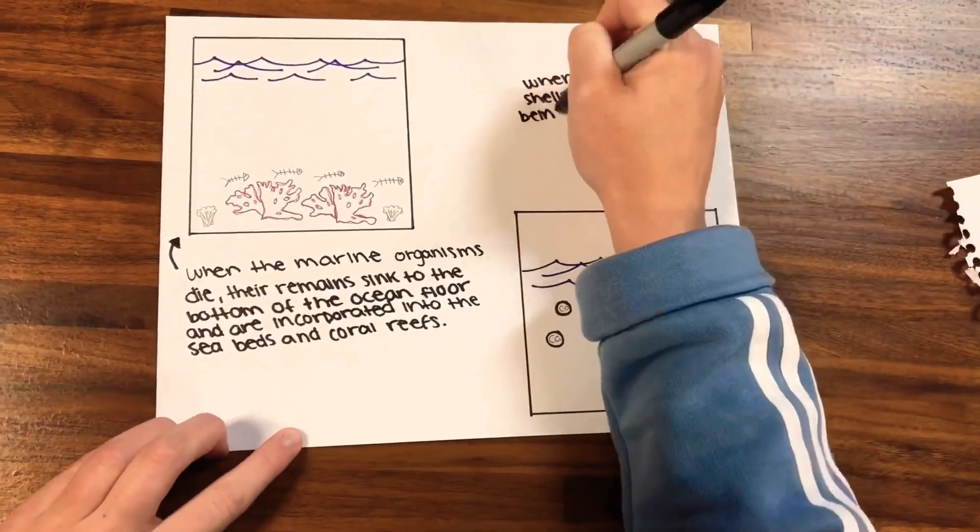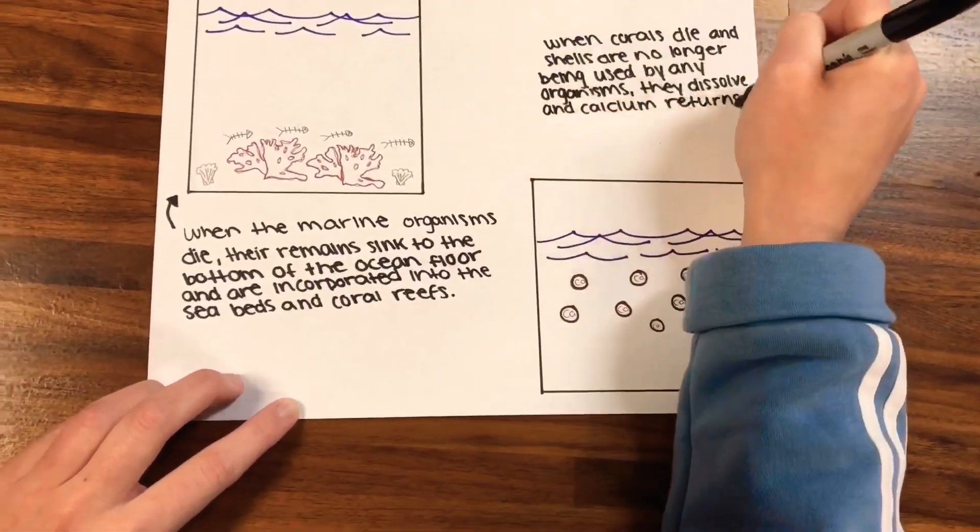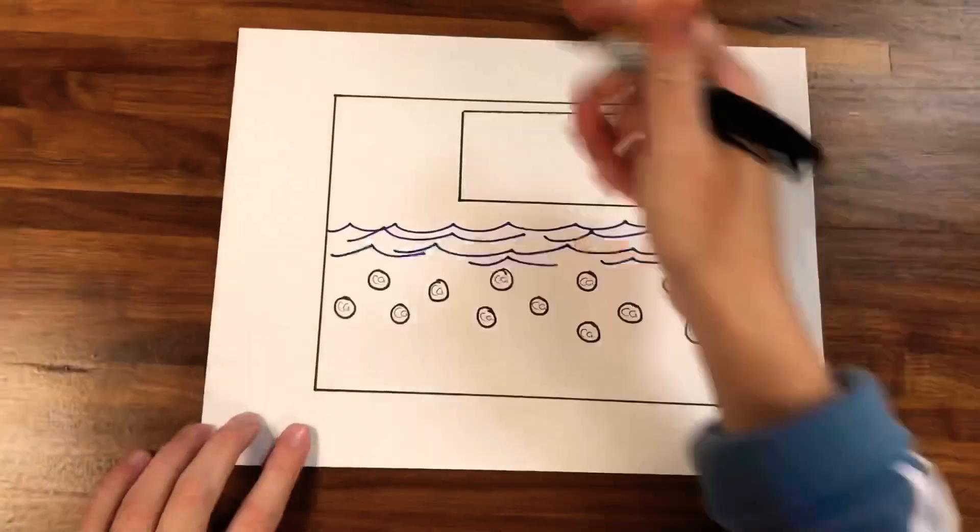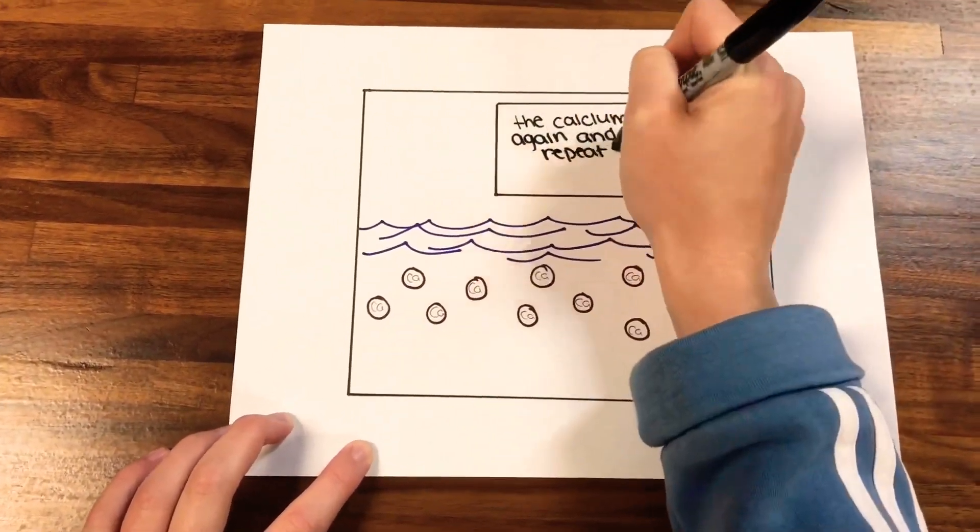When corals die and shells are no longer being used by any organisms, they dissolve and calcium returns to the surface layer of the ocean. The calcium is uptaken again, and the cycle repeats itself.